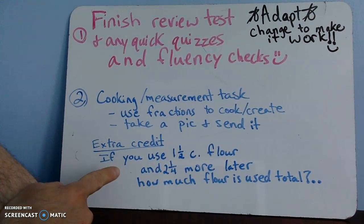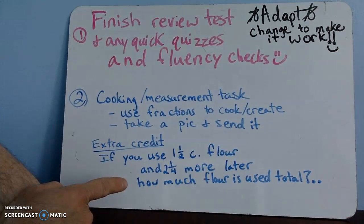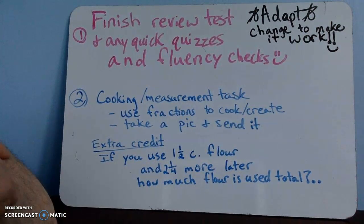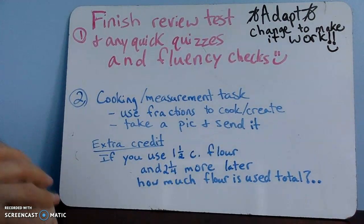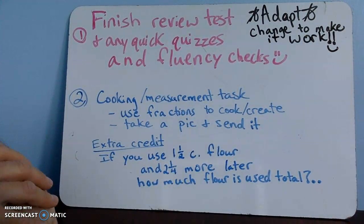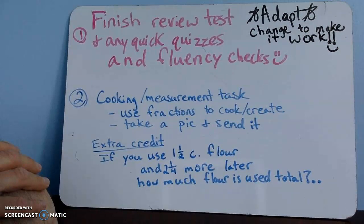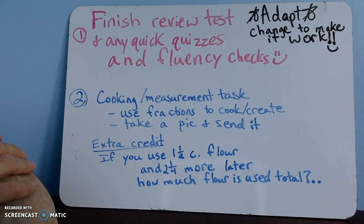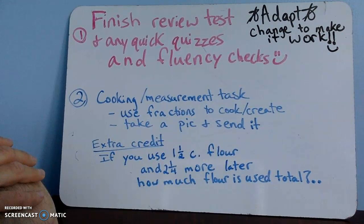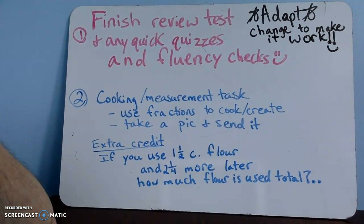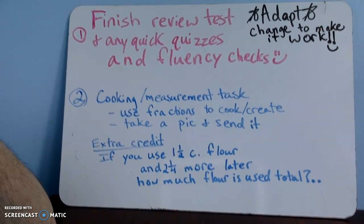The second extra credit question is: if you used one and a half cups of flour and two and one-fourth cups more, how much flour is used total? As far as the ruler goes, if you're using a traditional wooden ruler, we go: zero, one-fourth, one-half, three-fourths, the whole inch — then one and a fourth, one and a half, one and three-fourths, two inches, and the next whole inch. So if you're adding that half plus one-fourth, think about that as a clue.